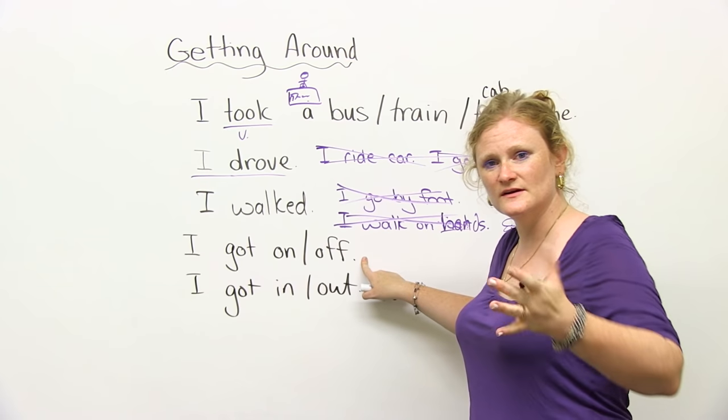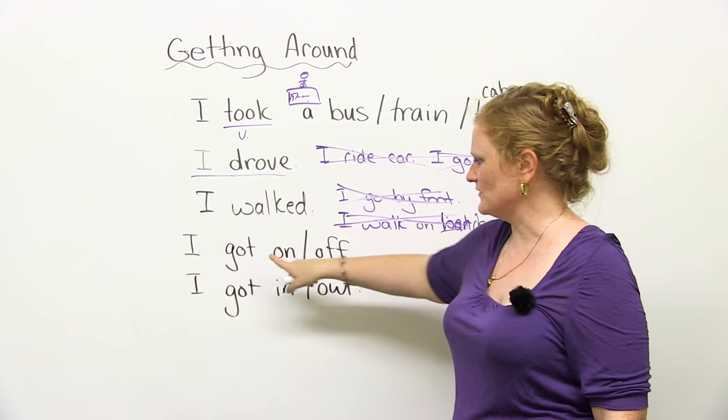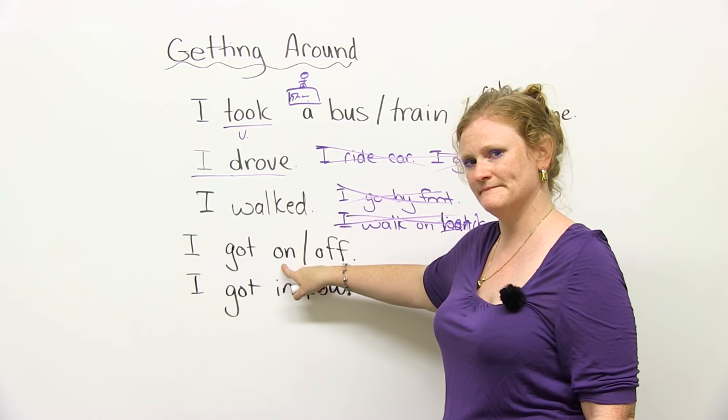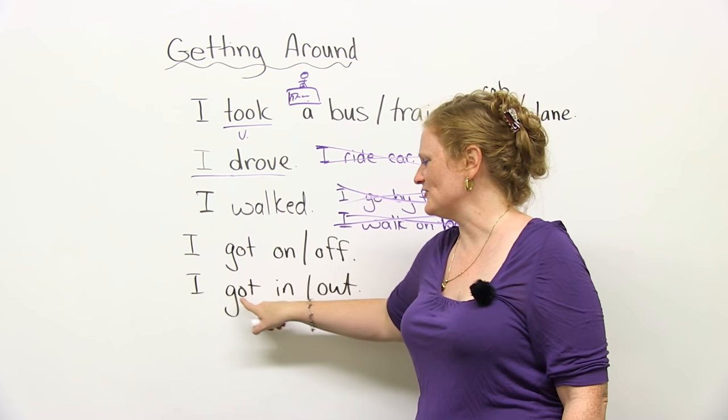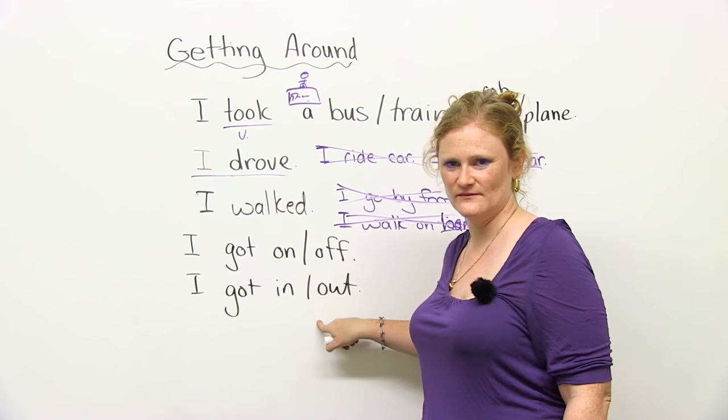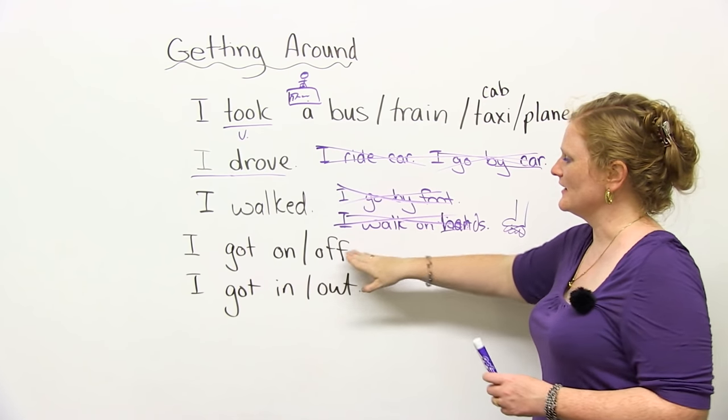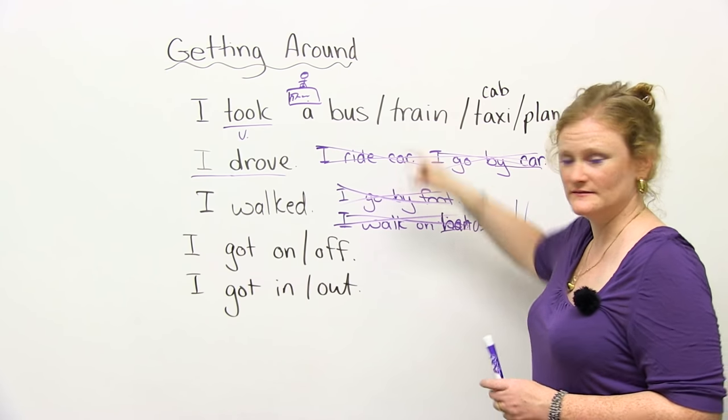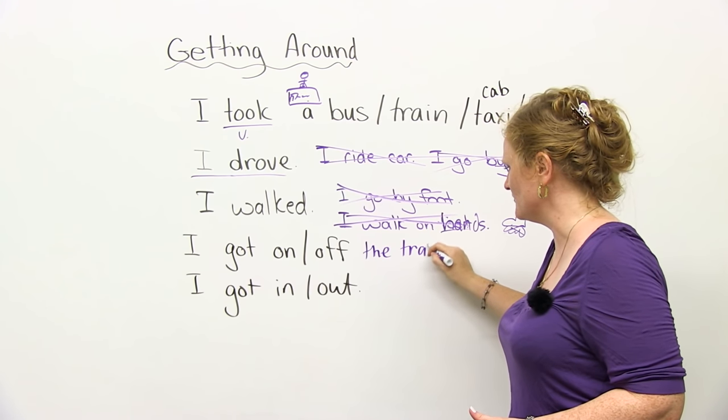Another thing that's really confusing in English, and I understand why, is when to use the phrasal verb got on or got off. When to say got in or got out. So as an example, we would say I got off the train. Let's write that down. Or you can say I got on the train.